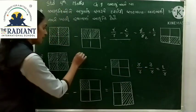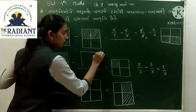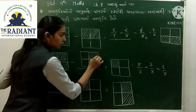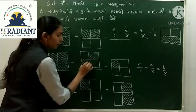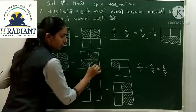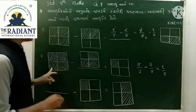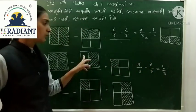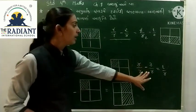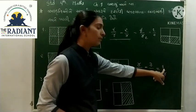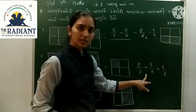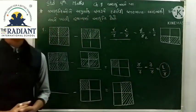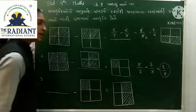ત્રણ ભાગ કળર કળ્યા (ચતુર્થાંશ). ત્રણ ભાગ કળ્યા, કેટલા ભાગ? 4. ત્રણ ભાગ કળ્યા, એટલે 4 - 3 = 1 અને જે છેદ આપ્યો છે, 4. આ રીતે આપણો જવાબ 1/4 (1 ચતુર્થાંશ) આવ્યો. જવાબ 1 ચતુર્થાંશ.